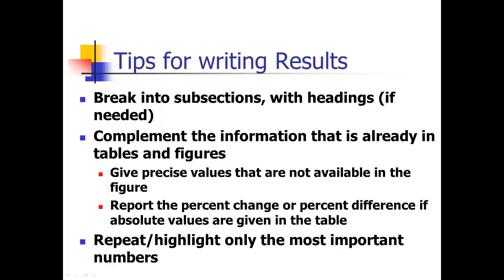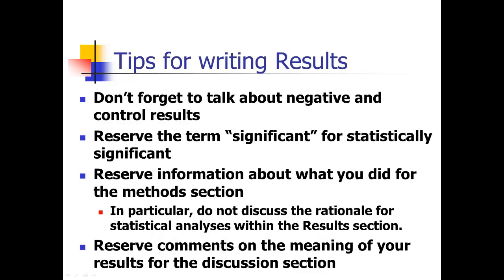You can repeat numbers that are in the tables, but make sure those are the key and most important numbers. In a drug study with one main outcome, you'll probably want to repeat that number in the text. But repeat and highlight only a few key important numbers. Also, don't forget to talk about negative and control results — we tend to focus only on positive results, but negative results are just as important.